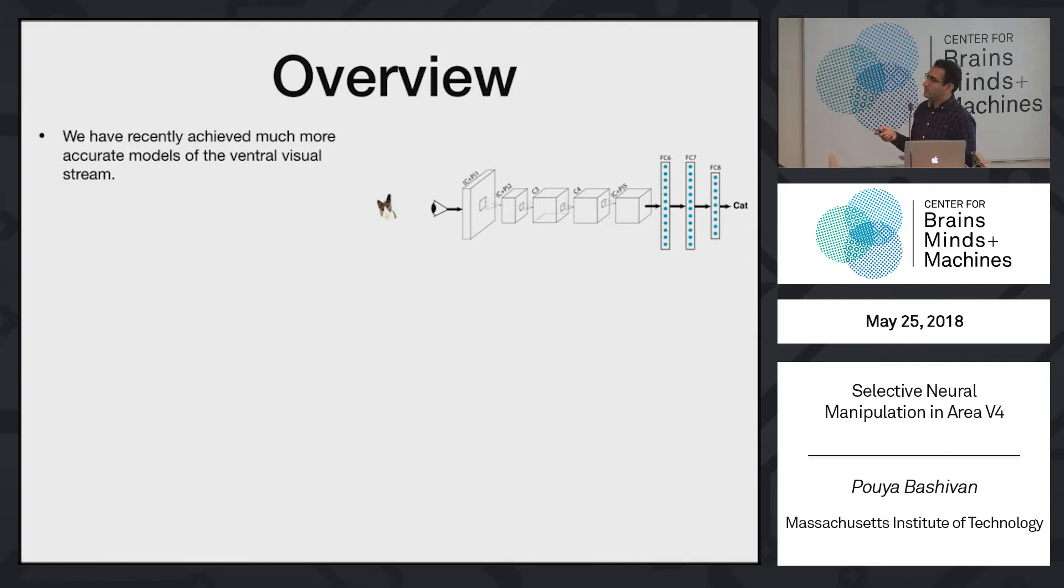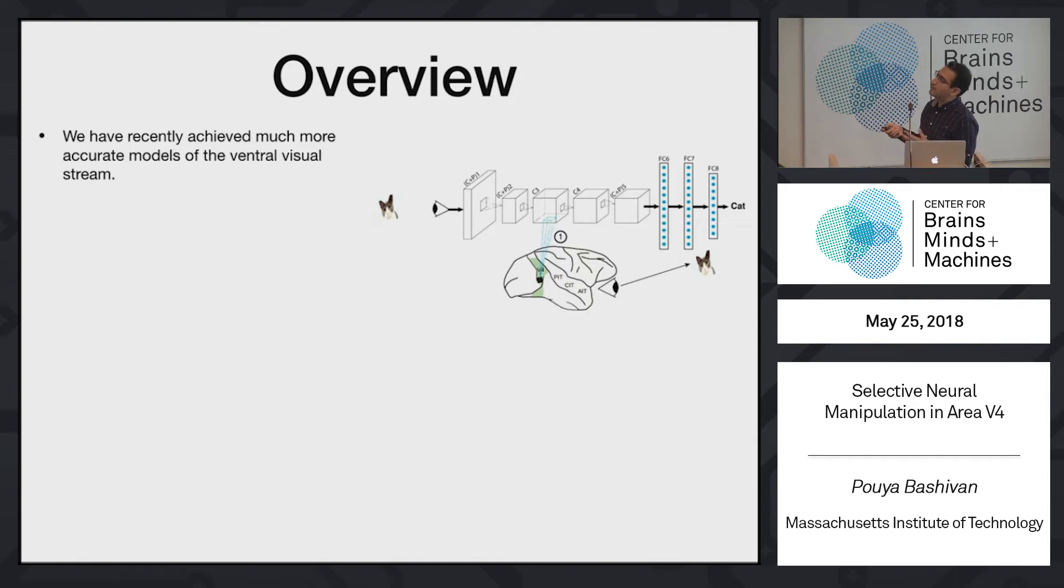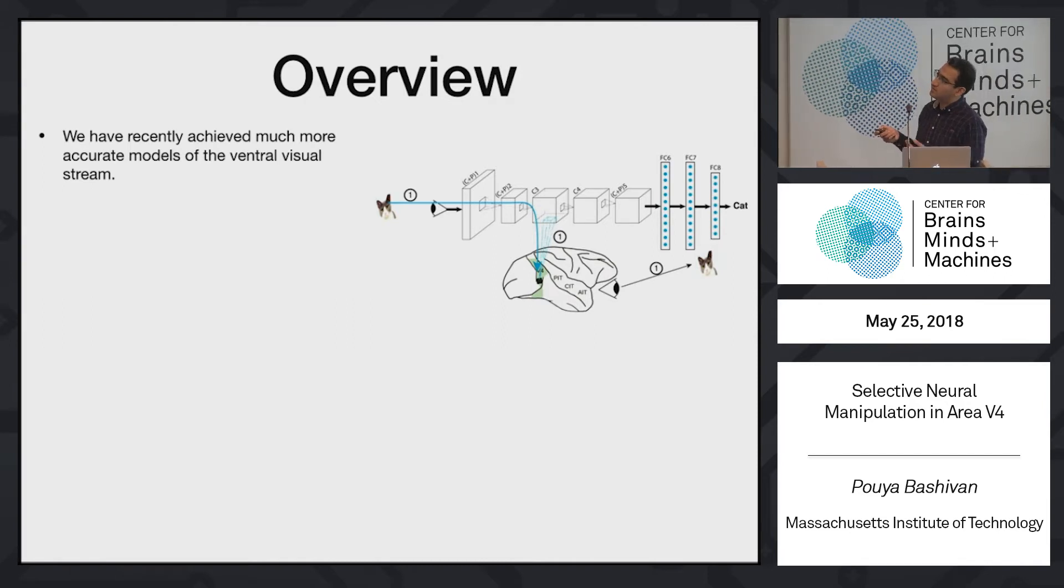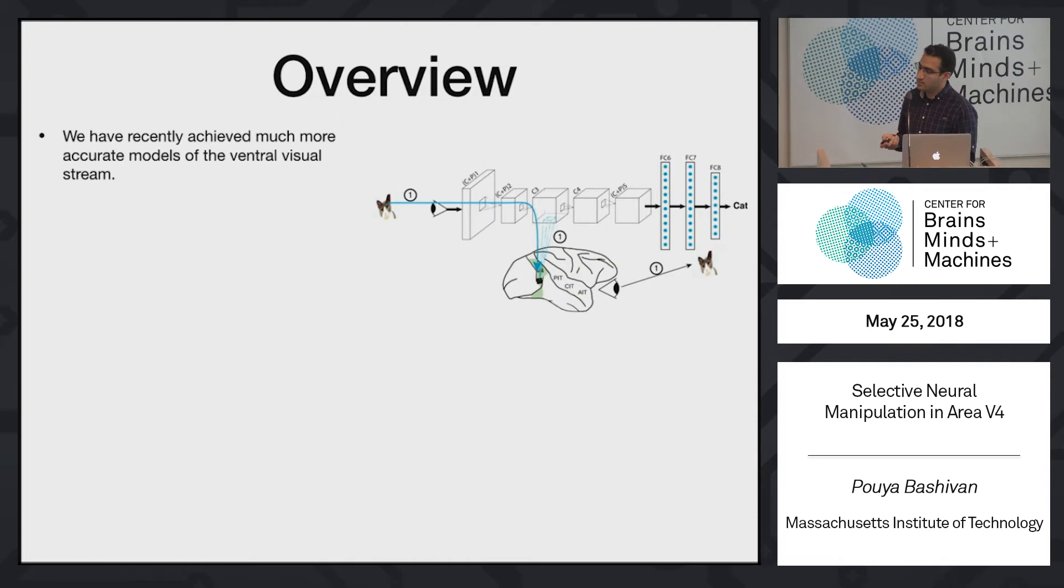Once we're done doing that, then we fix the parameters and then move on to the next step, which is basically now recording some neurons' responses to the same images from different areas in the brain. And then basically finding a mapping function going from internal features of these networks to predict the output or the activity in response to those images. So after we are done with this procedure, we have a model that goes from images to predictions of neurons, which is an image computable model.